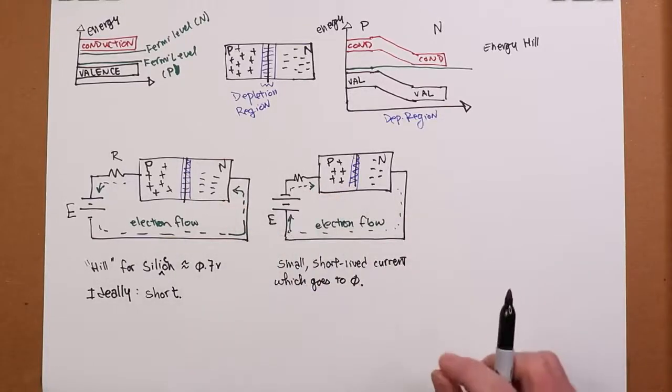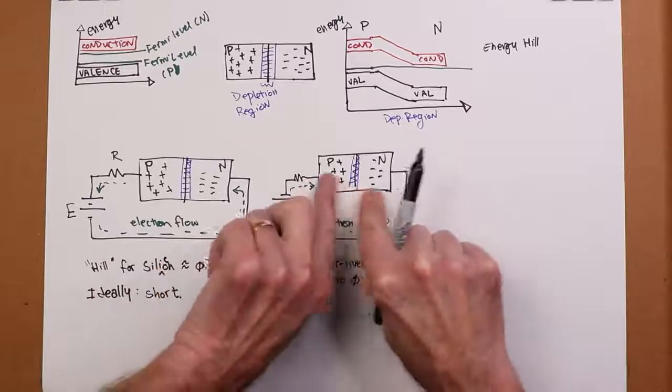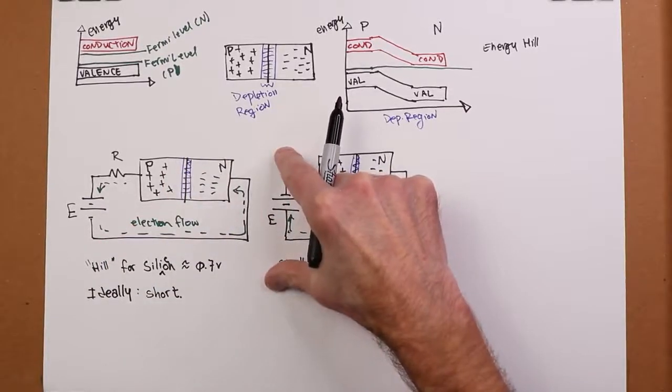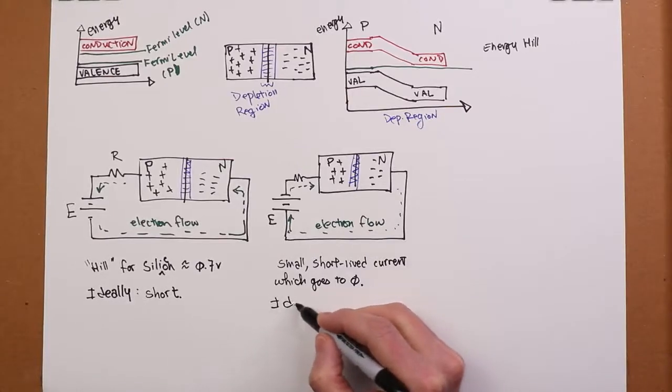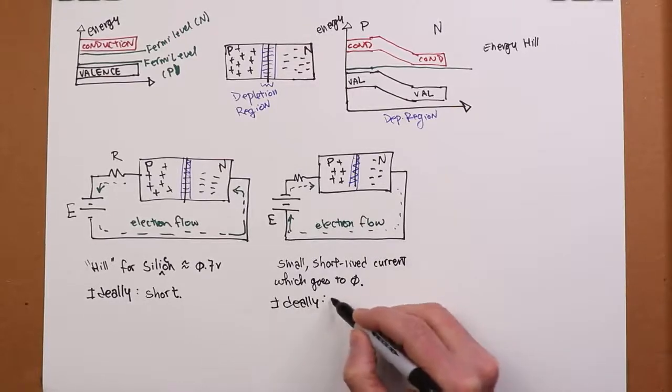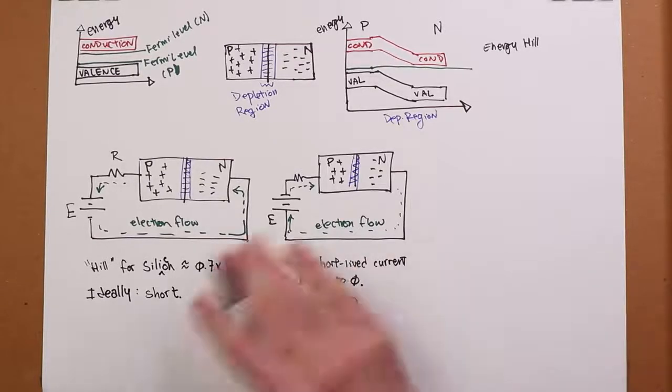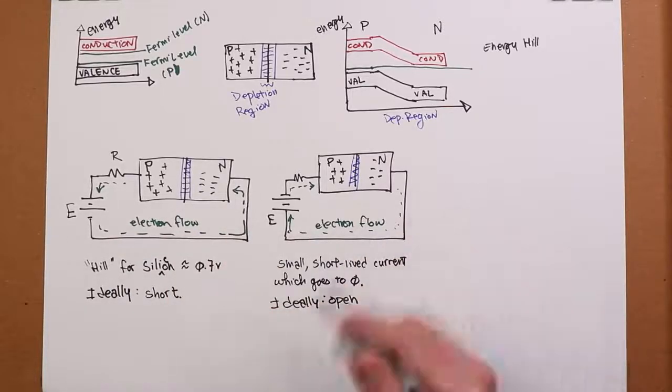So if we crank the voltage up, what ends up happening is, we get this sort of little transient event, but the depletion region just widens to accommodate whatever this potential is. So what ends up happening is, ideally, this thing looks like an open. So it's a highly asymmetric device. In one direction, it appears to be a short, but in the other direction, it acts like it's an open.